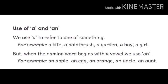But when the naming words begin with a vowel sound, we use 'an'. जब naming words vowel से शुरू होते हैं, या vowel sound से शुरू होते हैं, तब हम उससे पहले 'an' का यूज करते हैं। Examples: an apple, an egg, an orange, an uncle, an aunt. Here, all words begin with vowels.